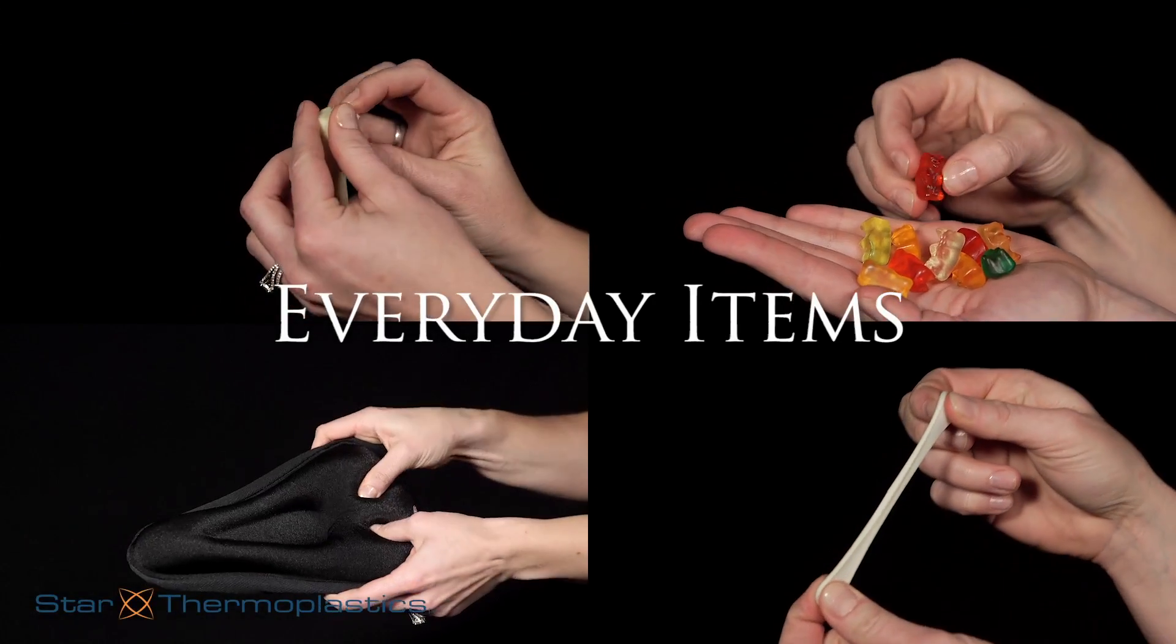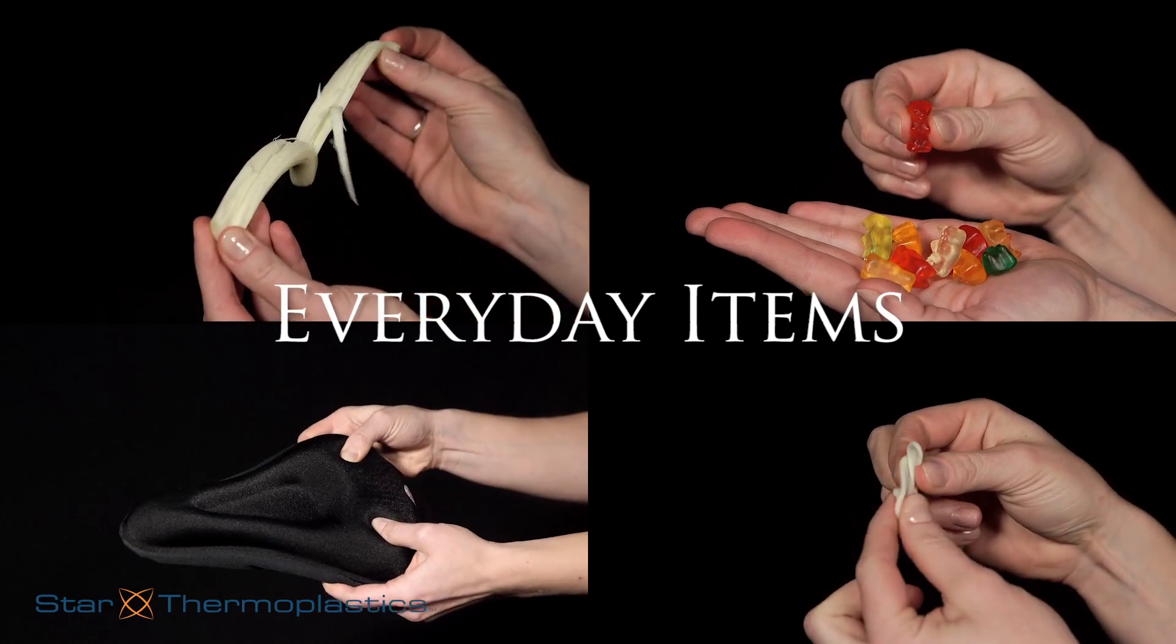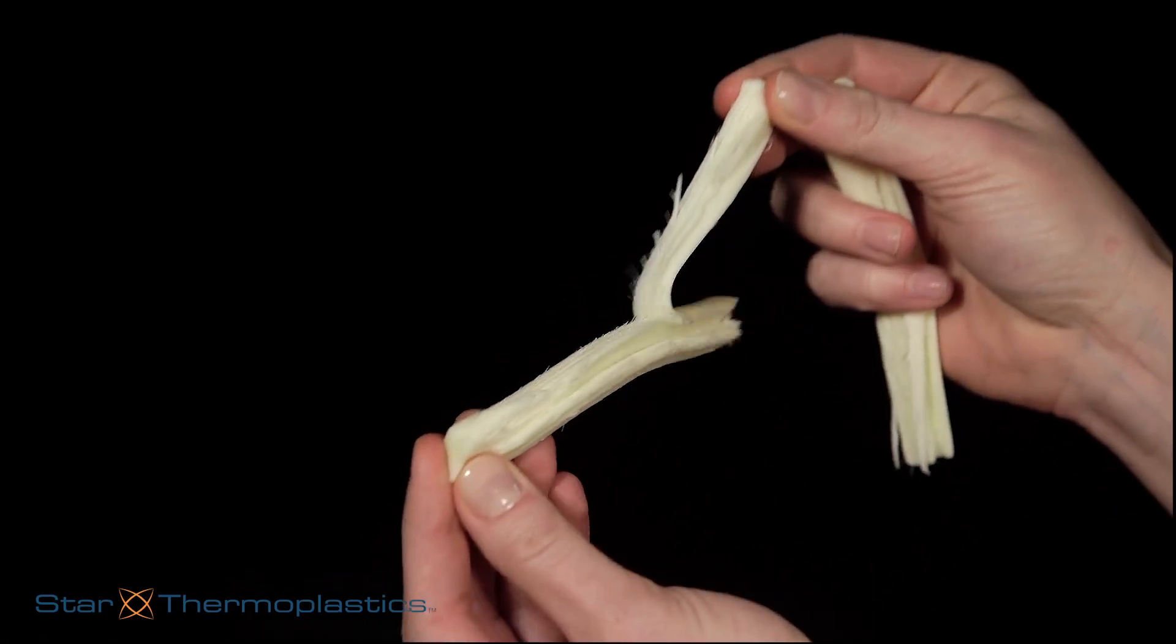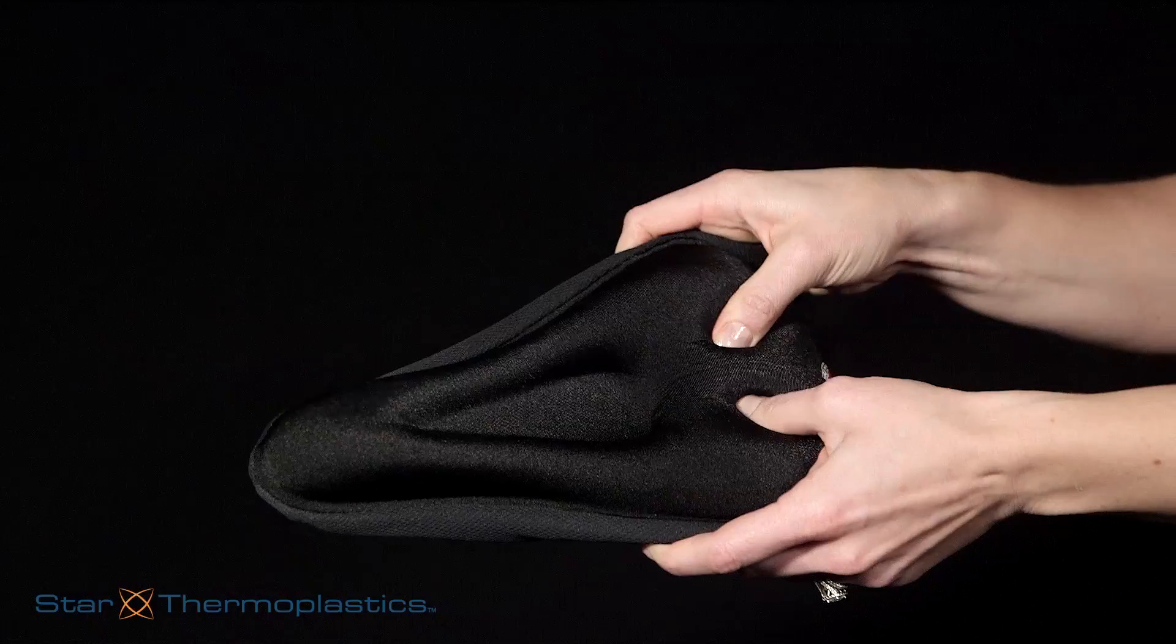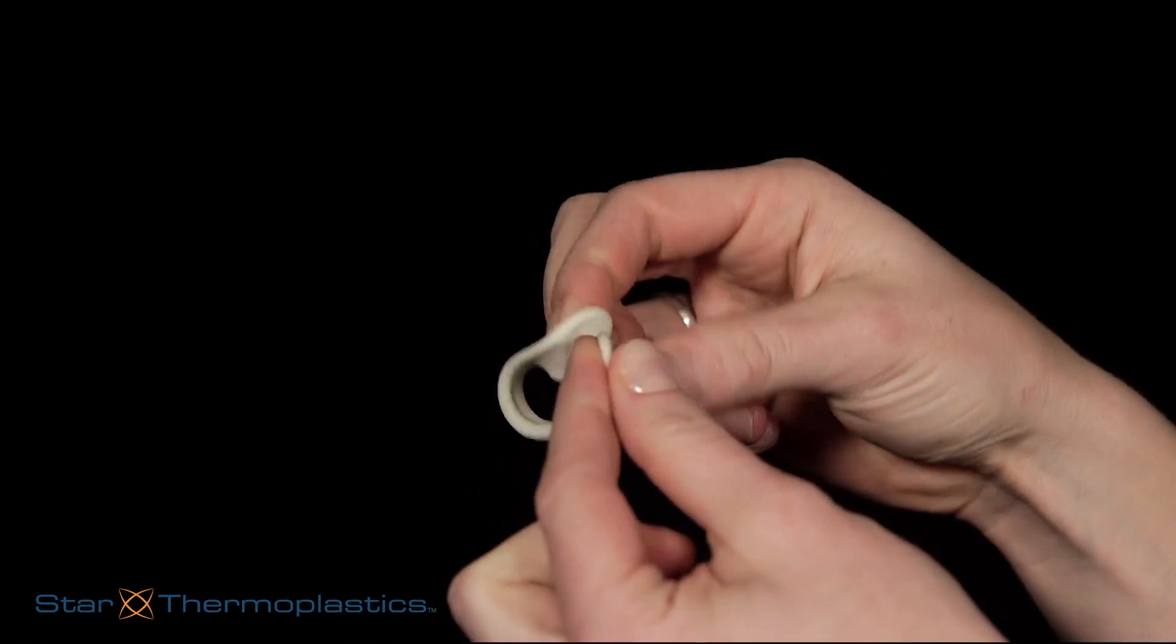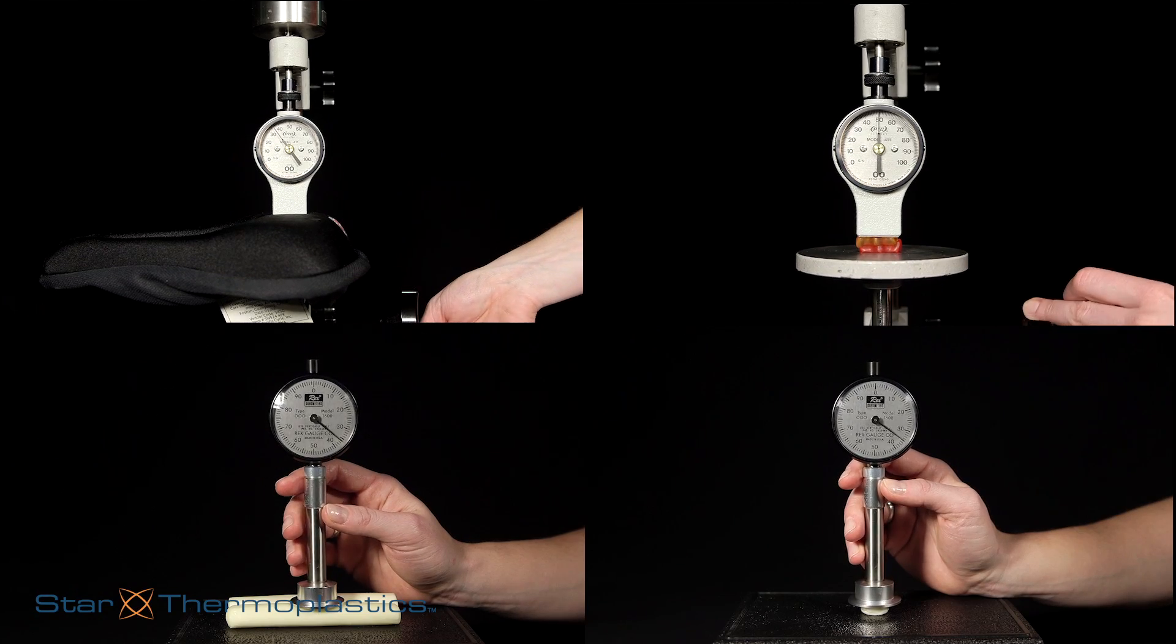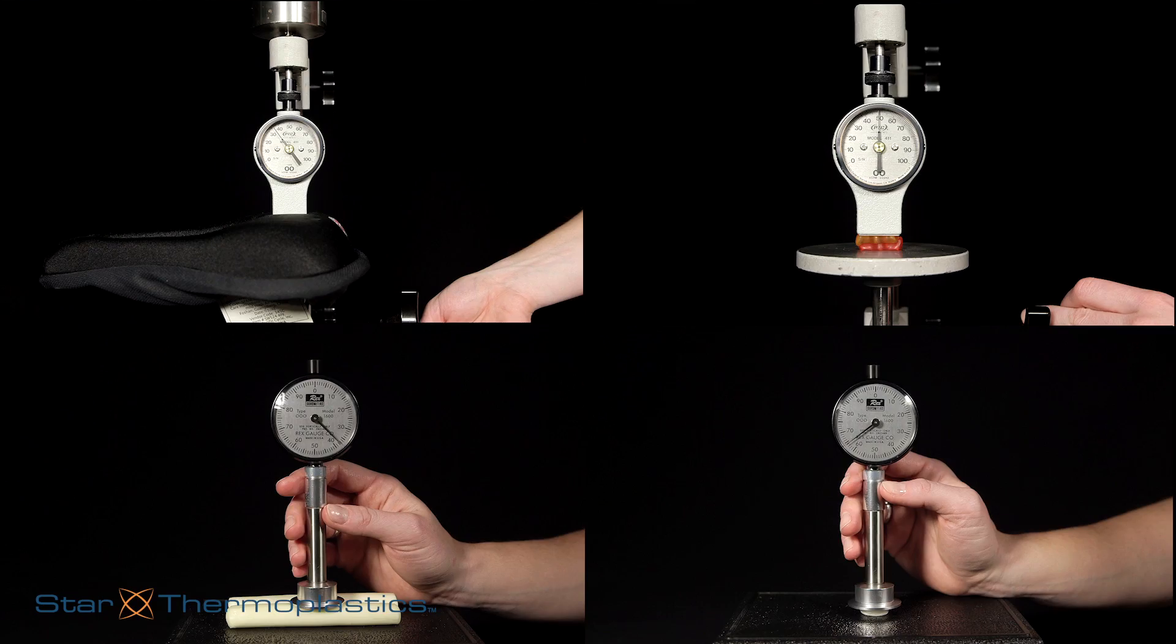Now let's have a little fun testing some items found in our day-to-day lives. Some examples being mozzarella cheese, gummy bears, bicycle gel seats, and chewing gum. I will demonstrate the various hardnesses of these materials with both the double and triple-aught scales.